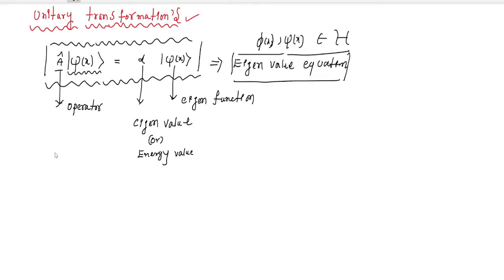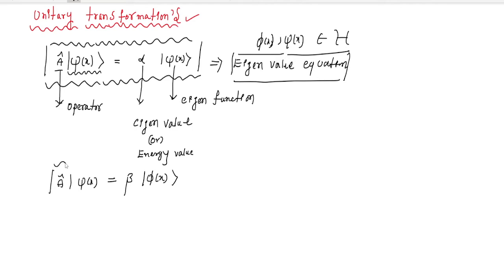In case if I apply operator A on the same wave function, and if I cannot get the same wave function — for example if I get some phi of x multiplied by some constant value beta — this type of equation we can call a transformation equation. So this is what we are going to discuss in this topic.